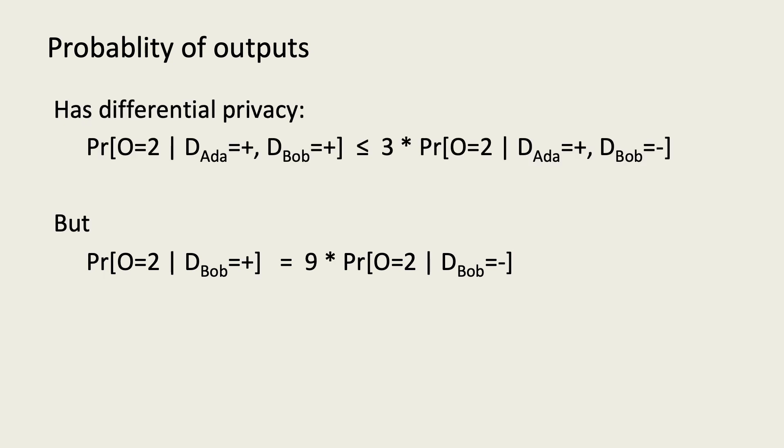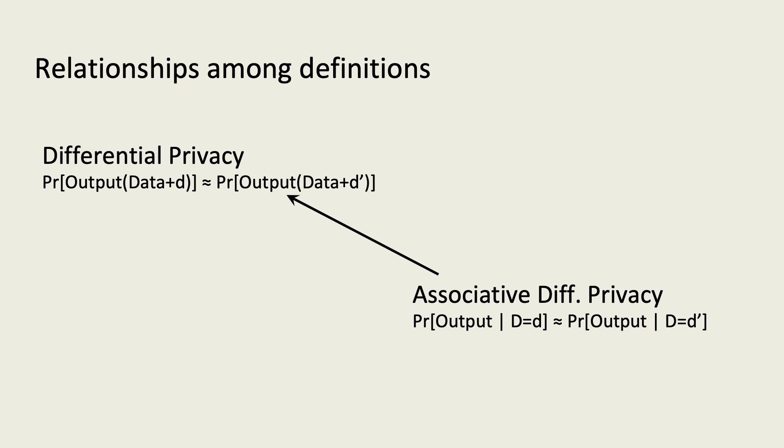So, while the algorithm has log 3 differential privacy, comparing the probability of outputs when conditioning upon just a single changed input involves a factor of 3 squared. Because of this, associative differential privacy implies differential privacy, but is strictly stronger.